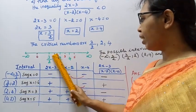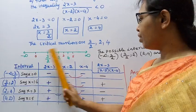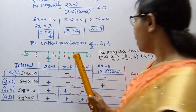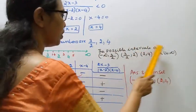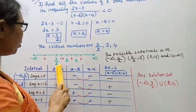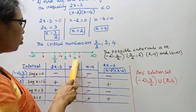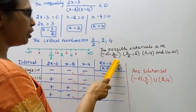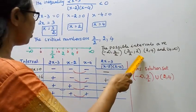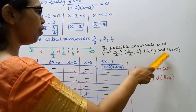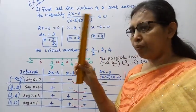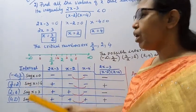The number line goes from minus infinity to infinity, with critical points at 3/2, 2, and 4. The possible intervals are: minus infinity to 3/2, then 3/2 to 2, then 2 to 4, and finally 4 to infinity.